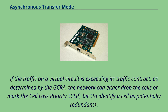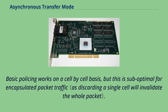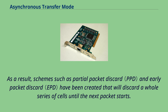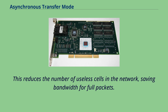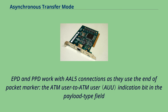Basic policing works on a cell-by-cell basis, but this is suboptimal for encapsulated packet traffic. As a result, schemes such as partial packet discard (PPD) and early packet discard (EPD) have been created that will discard a whole series of cells until the next packet starts. This reduces the number of useless cells in the network, saving bandwidth for full packets. EPD and PPD work with AAL5 connections as they use the end-of-packet marker — the ATM user-to-ATM user indication bit in the payload-type field.